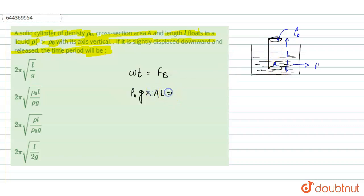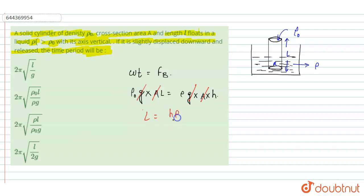Since we know that if the cylinder is in equilibrium, then weight equals buoyancy force. Weight of the cylinder equals rho naught times G times V, where volume is A times L. Buoyancy force equals rho times G times V, where V is A times H. Solving, we get L equals H times rho upon rho naught. This is equation number one.